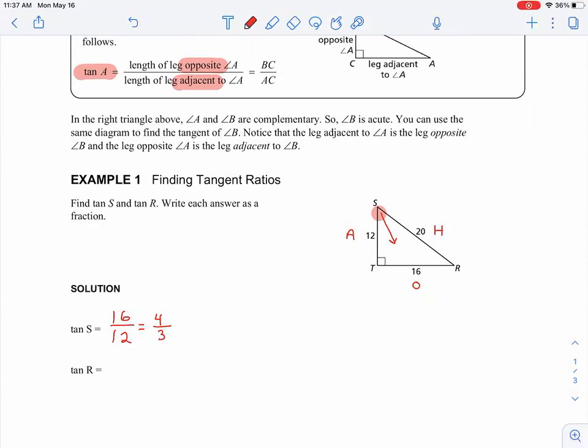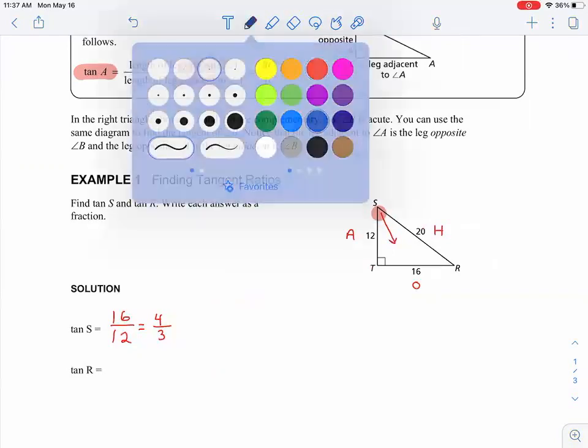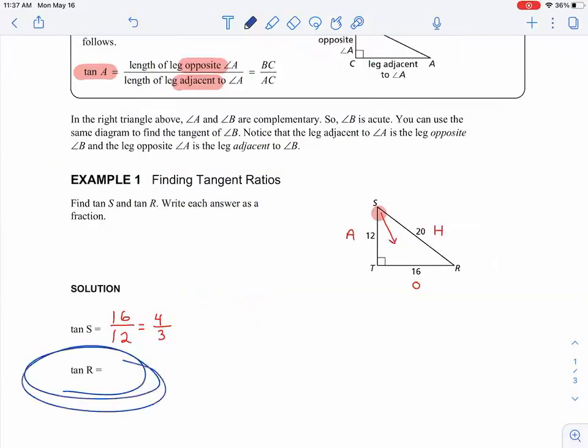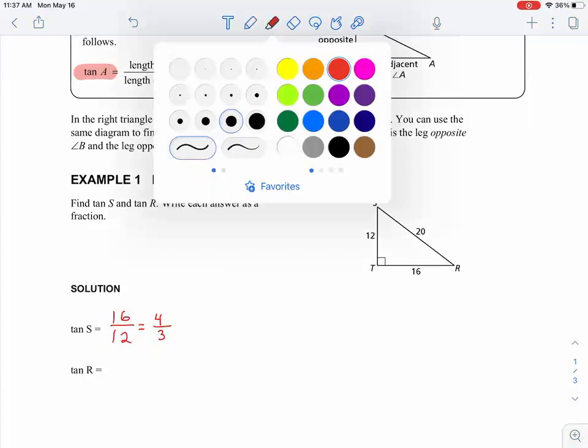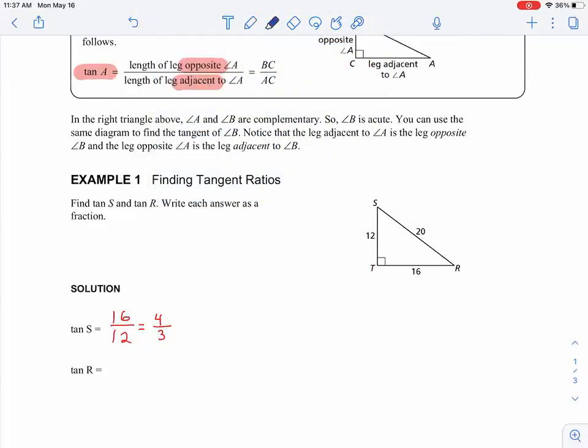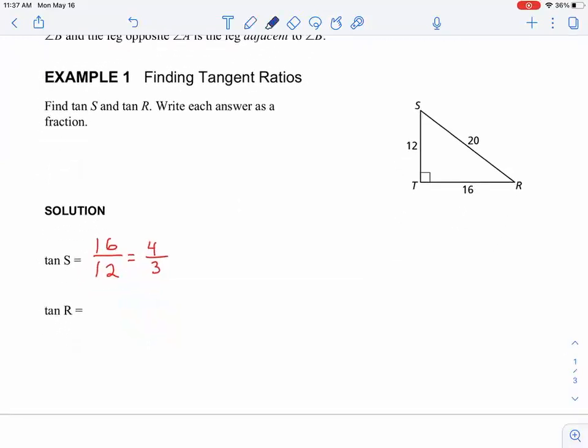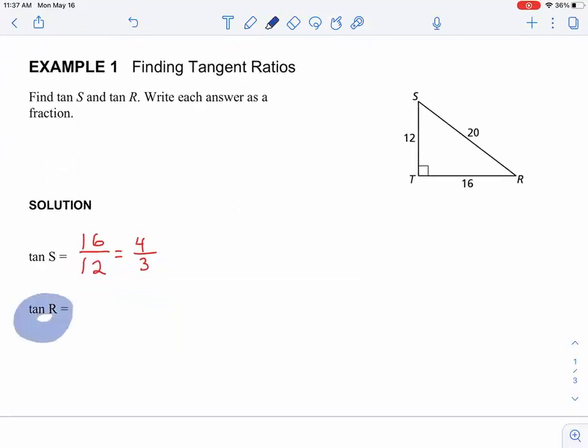All right. I'm going to do, now I'll change colors here, because the second question says we want to find the tangent of R. So I'm going to, I'm using the same picture here. I'm going to get rid of that stuff and change my highlighting color to blue, because now we're looking at a different angle. Again, it's asking for the tangent of R. So I'm going to highlight R right there.